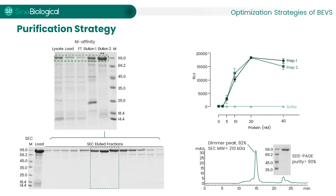Some proteins require certain oligomeric formations to be functional. For example, human FAP exists as a homodimer. Caution should be exercised during purification to ensure protein activity. We must check the protein fractions for the correct oligomeric status. In this case study, a His-tagged protein was expressed using the BEVS. The nickel affinity eluate contained a mixture of monomer and dimer. Because the protein is active as a dimer, a second gel filtration purification step was required to enrich the dimer. The dimeric confirmation of the final product was confirmed by HPLC, and the protein exhibited reproducible enzymatic activity across two different batches.